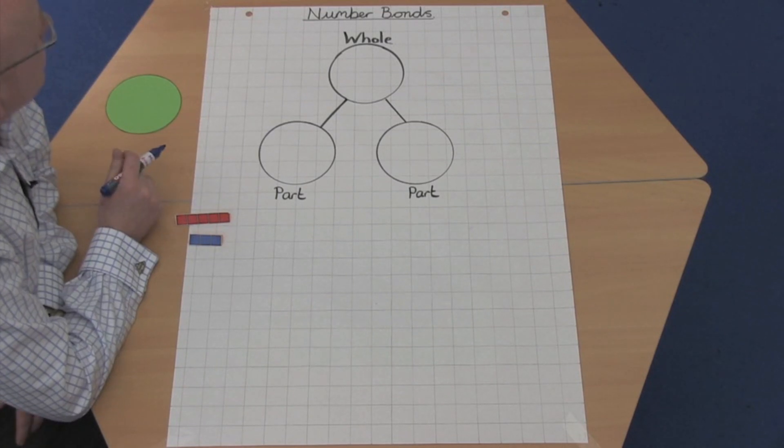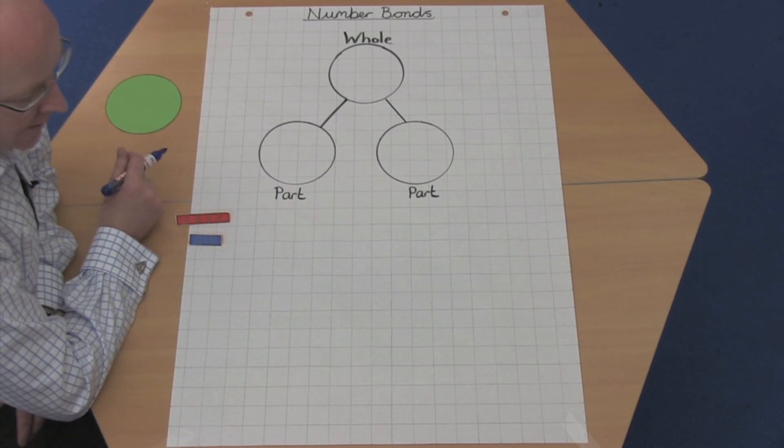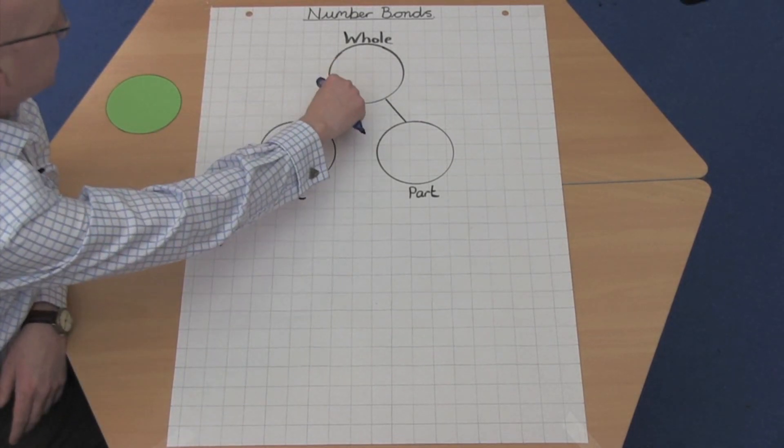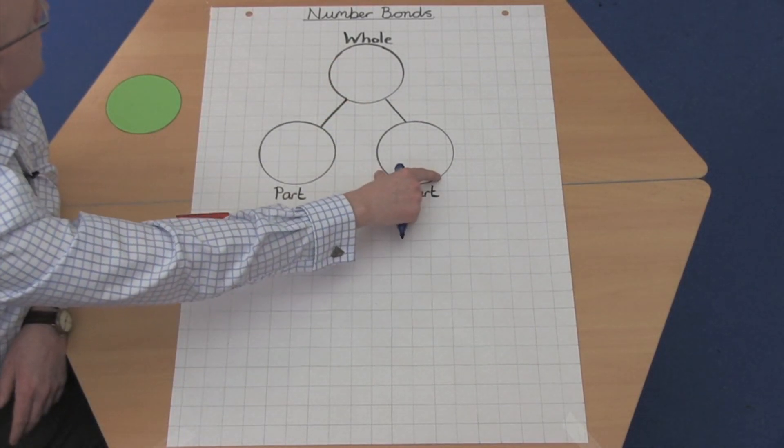Simply explained, number bonds show the relationship between addition and subtraction and contain three different elements: the whole and two or more parts.